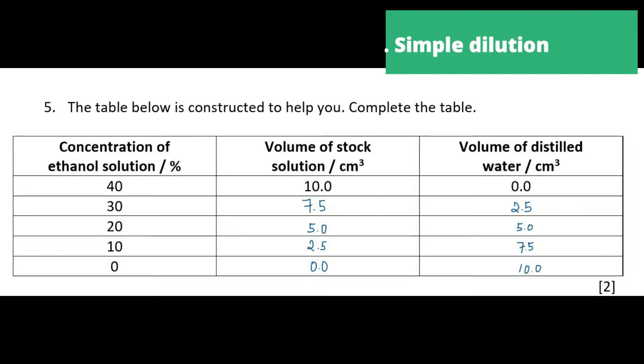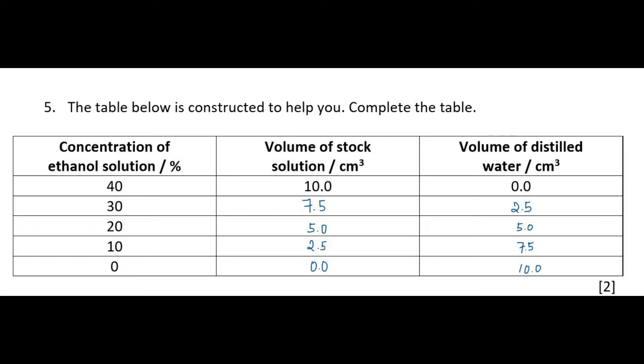So first things first, let's prepare our simple dilutions of ethanol solution. We're going to start with 40% and using the steps outlined in my previous video, how to perform simple dilutions, we come up with these volumes. So the volume of stock solution here refers to 40% and we're going to top it up until all the solutions are 10 cm cubed. So they are all the same volume at the end. Different concentrations, same volume.